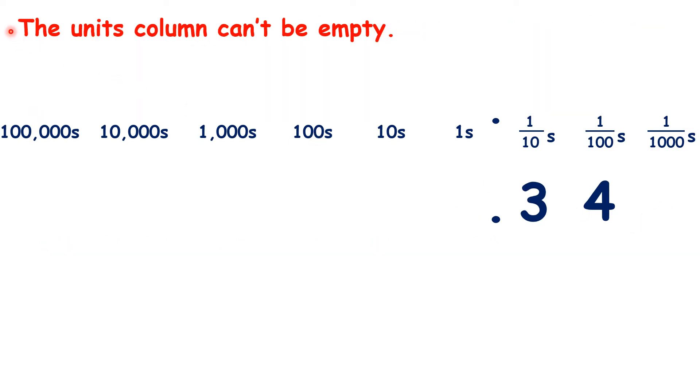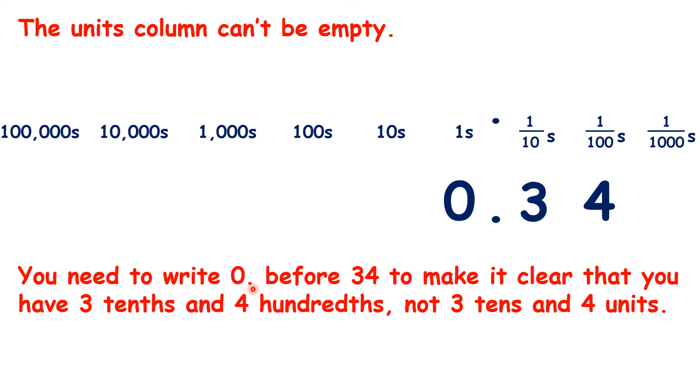Another important thing to remember with decimals is that the units column can't be empty. So we wouldn't usually write .34. If our units column is empty, we write in a zero. So rather than just .34, we need to write 0.34. You need to write the zero before 3, 4 to make it clear that you have 3 tenths and 4 hundredths, not 3 tenths and 4 units.